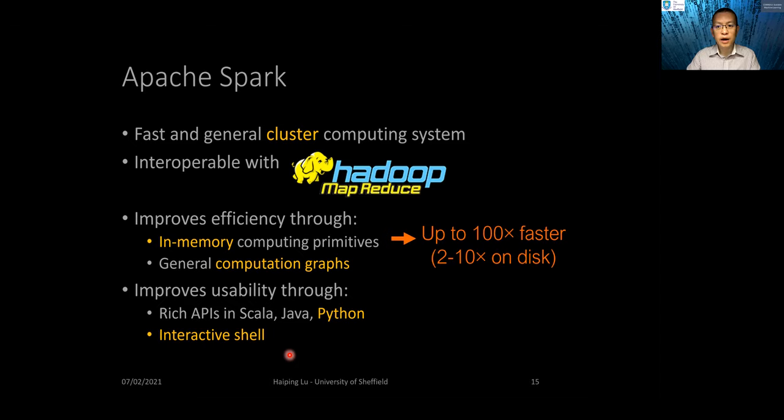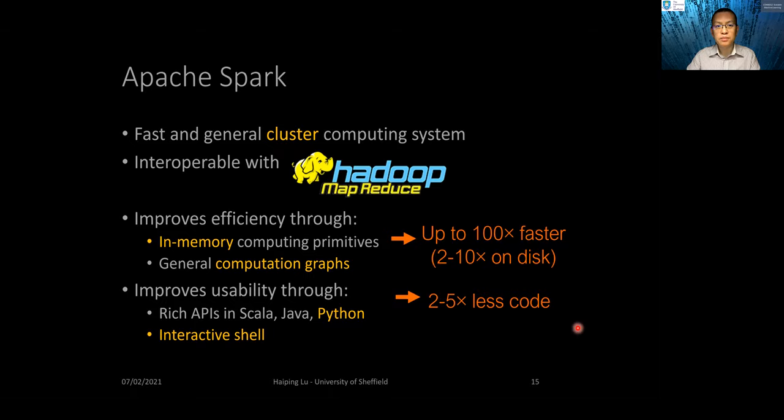It has been shown that in-memory computing can improve speed by up to 100 times. And even on disk, it can improve 2 to 10 times. The improved usability has been shown to lead to 2 to 5 times less code for the same task.